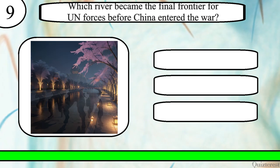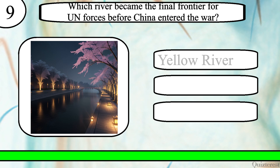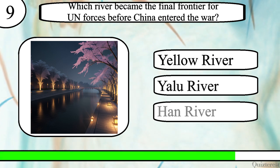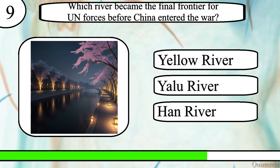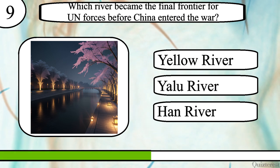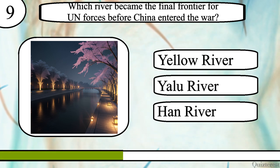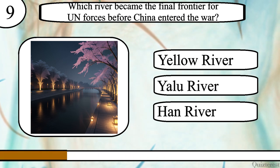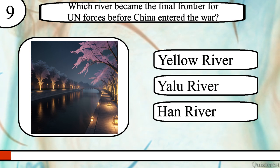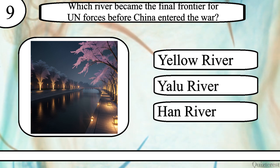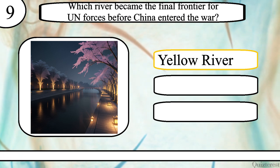Question 9. Which river became the final frontier for UN forces before China entered the war? Yellow River, Yalu River, or Han River? The correct answer is Yalu River.